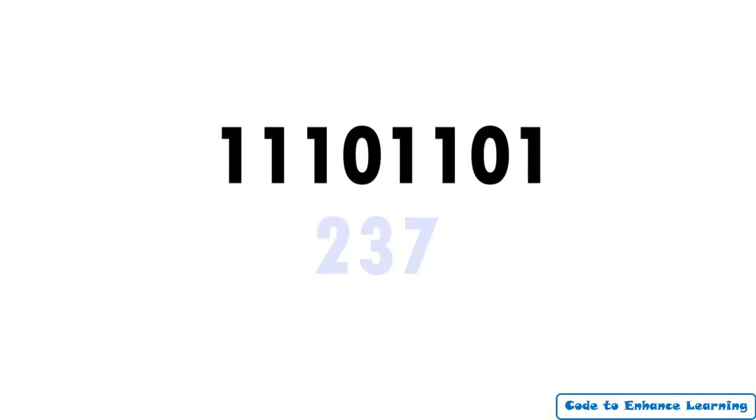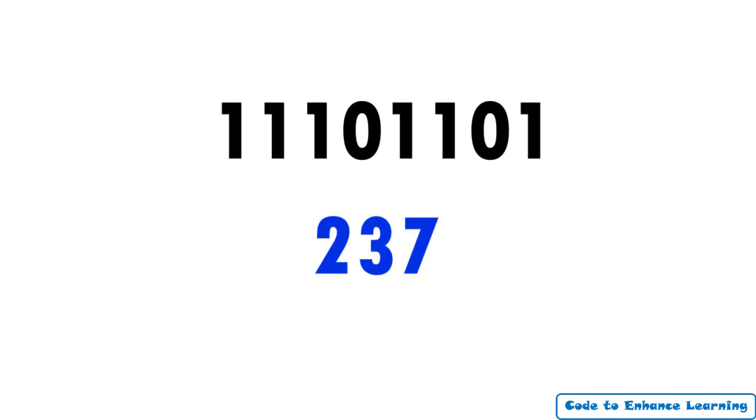Pause the video, remember the 6 steps and try to convert this binary number into a decimal number. The binary number as shown on the screen is equal to the decimal number 237.